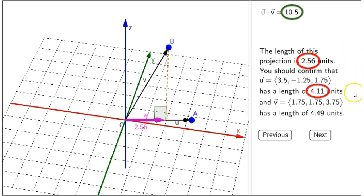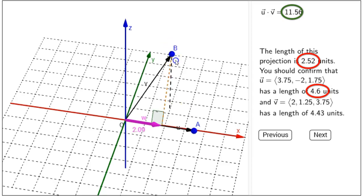2.56 times 4.11 turns out to be about 10.5. And no matter how I change my A and B, that relationship will continue to hold.